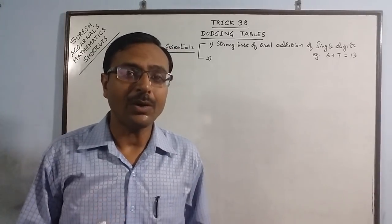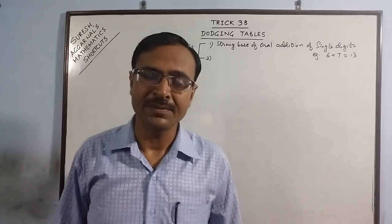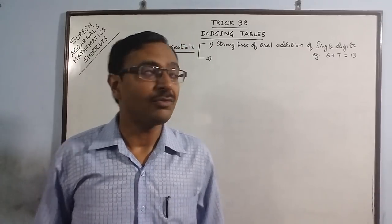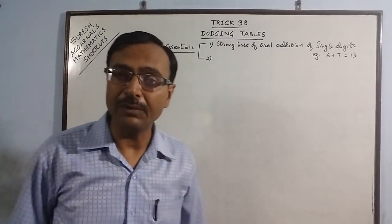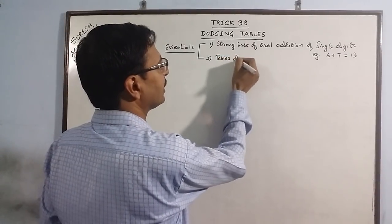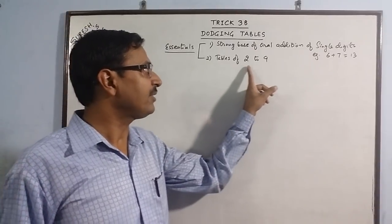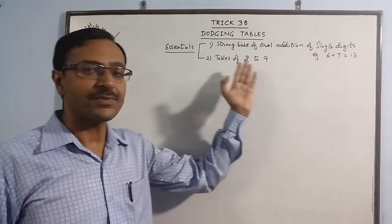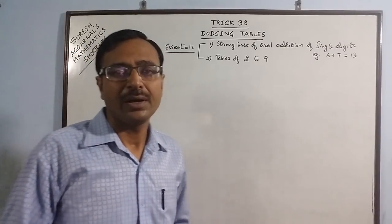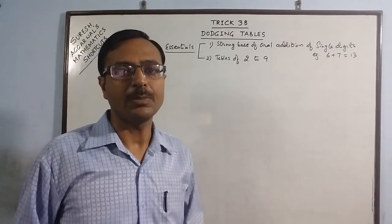Parents, work on your child's oral addition from age 4 onwards and keep working for the next 2 or 3 years, so that when you arrive at dodging tables, the basic concepts are very clear to the child. The second essential is the tables of 2 to 9 — single digit numbers. If the child is comfortable with single-digit tables and oral addition, this is sufficient to write any product from the table of any 2-digit number, say up to 30.